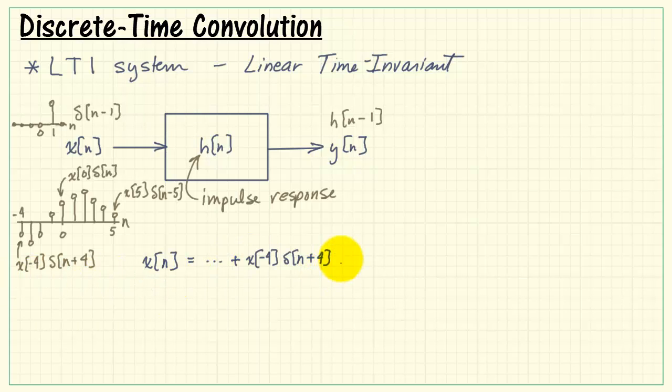For example, delta of n plus 4 is scaled by x of minus 4. Here at n equals 0, we have x of 0 times delta of n. Here's another example, x of 5 times the delta located at n equals 5.